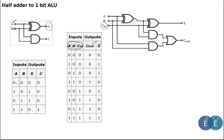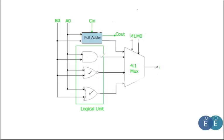A half adder takes inputs A and B, outputting a sum and carry. When both inputs are 1, carry is 1 and sum is 0. Two half adders can be cascaded to make a full adder, which also accepts a carry-in from a previous stage, allowing us to cascade one-bit adders to build four-bit or eight-bit adders.